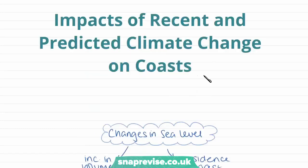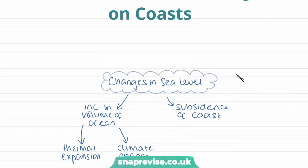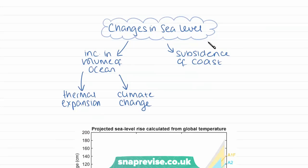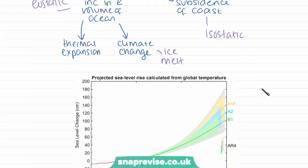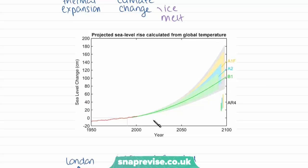To finish, we'll look at some of the impacts of recent and predicted climate change on coastlines. Changes in sea level due to climate change are caused by subsidence of the coast — isostatic change — and also eustatic changes for two reasons: climate change causes ice melt, which increases the volume of water in the sea, and also thermal expansion, because as water heats it expands, increasing in volume as global temperatures rise. A graph shows sea levels are expected to rise very steeply over the next century.